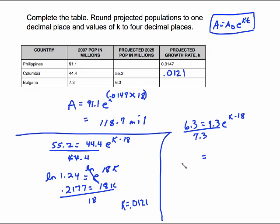We'll see what happens. 6.3 divided by 7.3 is 0.863 equals E to the 18 K. Solve it like we do on these other ones. Take the natural log of both sides. LN of 0.863 is negative 0.147. Were you expecting a negative? Equals 18 K because those cancel out. Divide by 18. And K is negative 0.0082.